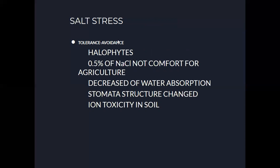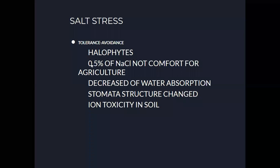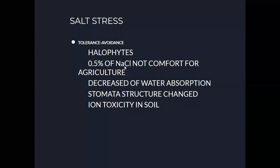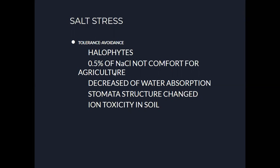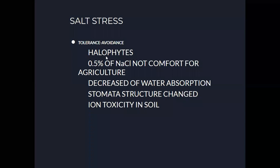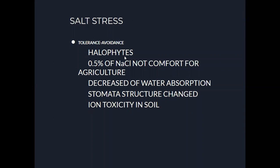The next is salt stress. Salt stress means salt — sodium chloride (NaCl) — is present in the soil. If up to 0.5% NaCl is present, the soil is not comfortable for agriculture. These soils are called saline soils. Plants that develop on saline soils are called halophytes. Halophytes can survive in salt condition soils, and this survivance is called tolerance.